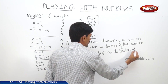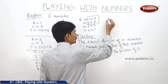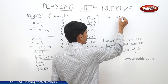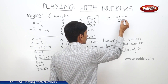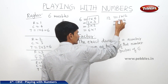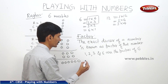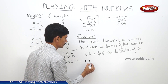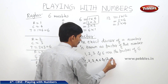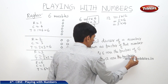Similarly, if you want to write the factors of 12, then 12 can be written as one into 12, two into six, and three into four. So one, two, three, four, six, and twelve are the factors of 12.